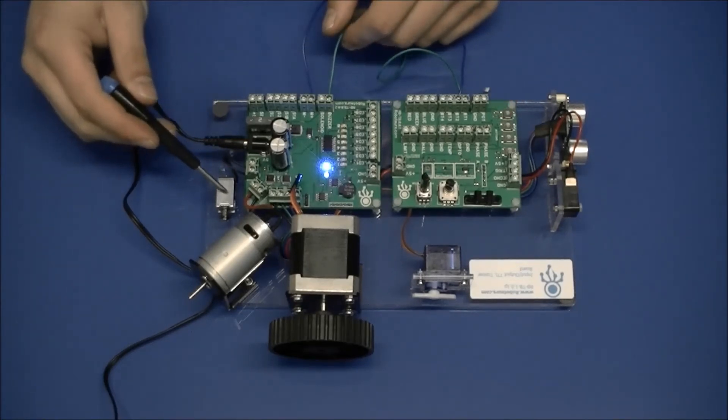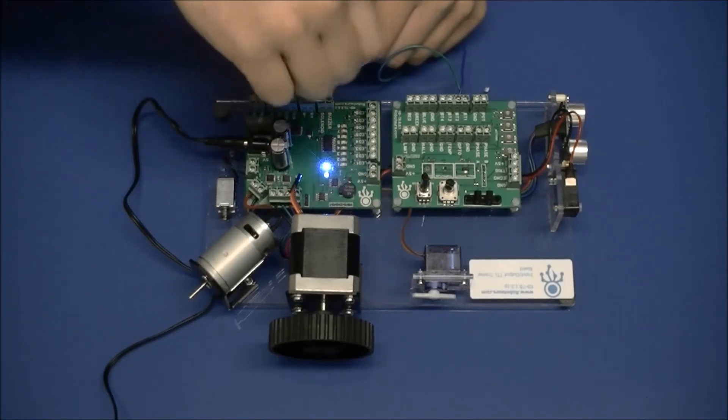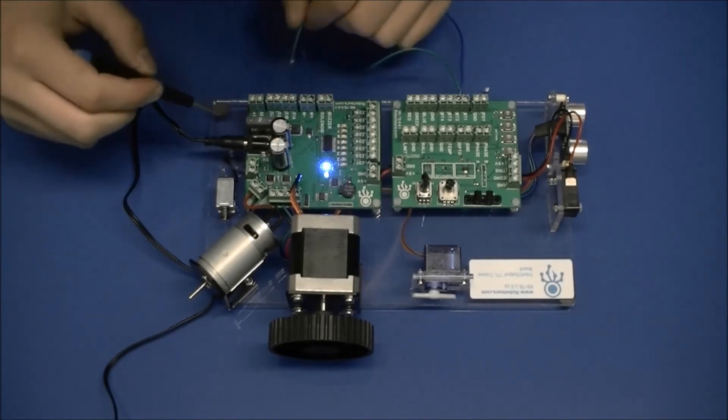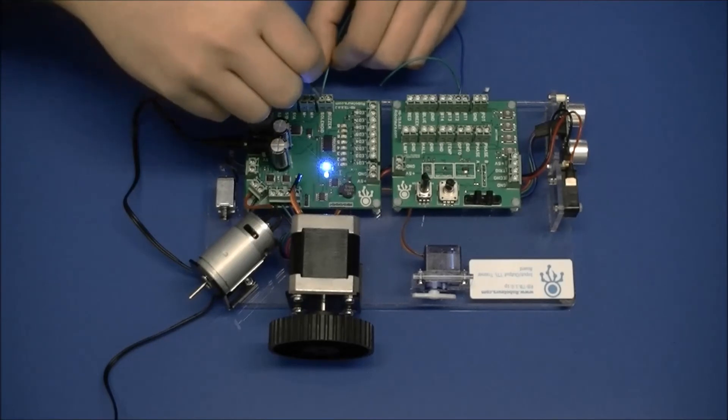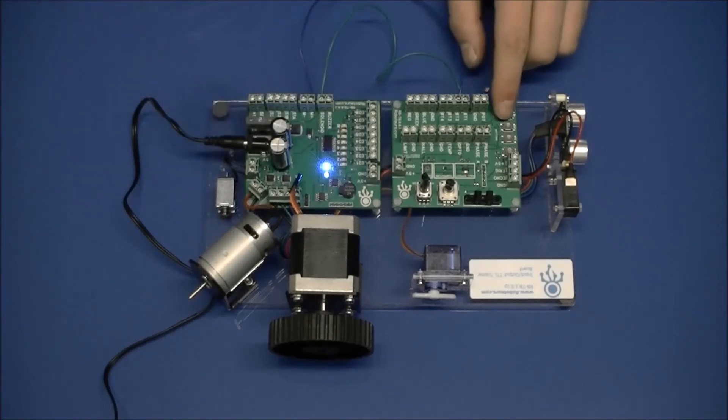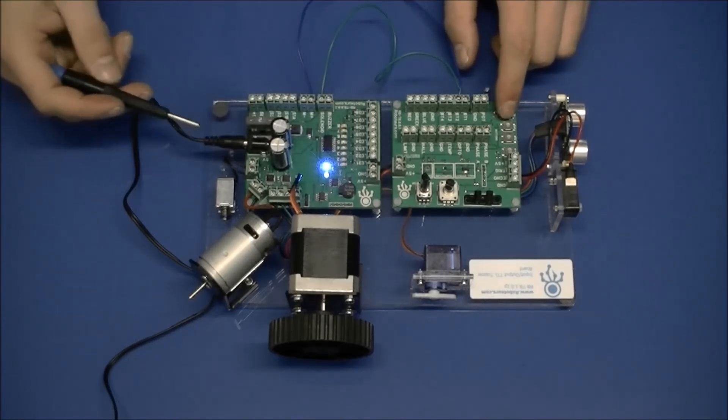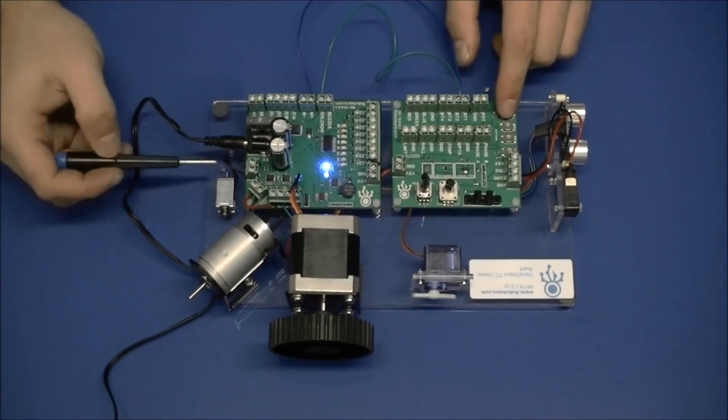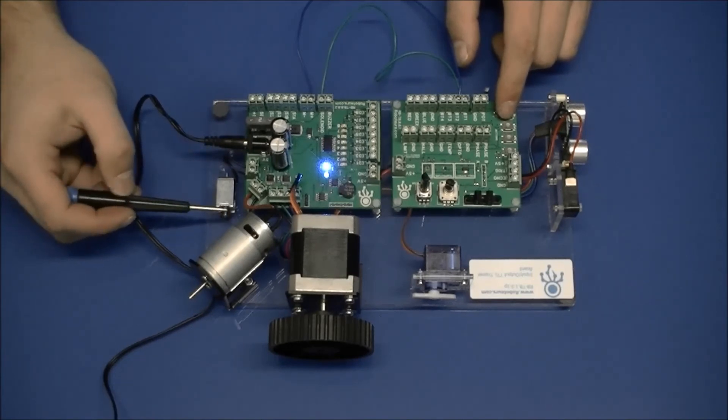Over here we have a very small solenoid. When I take the button and run it to the solenoid and press the button we see the solenoid actuating. It is a spring return solenoid.